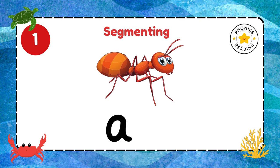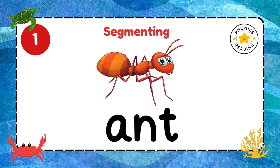Ah is the first sound I can hear. Can you write A? Quickly write it. N is the second sound. Write N. T is the last sound. Ant. Can you read it? Ant.